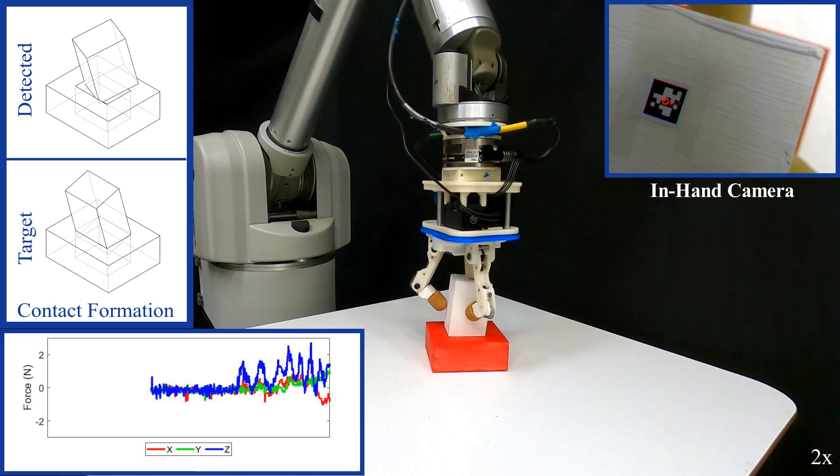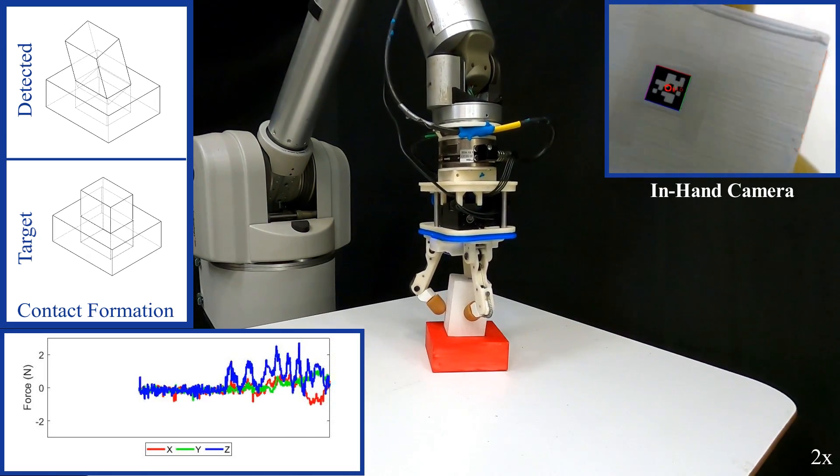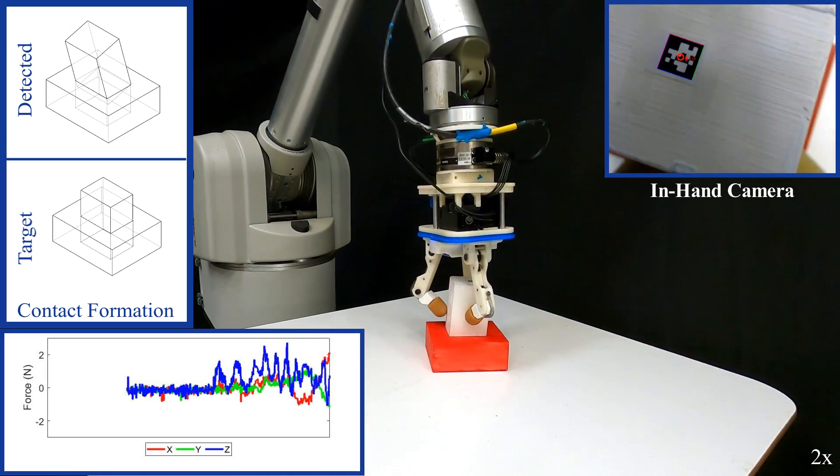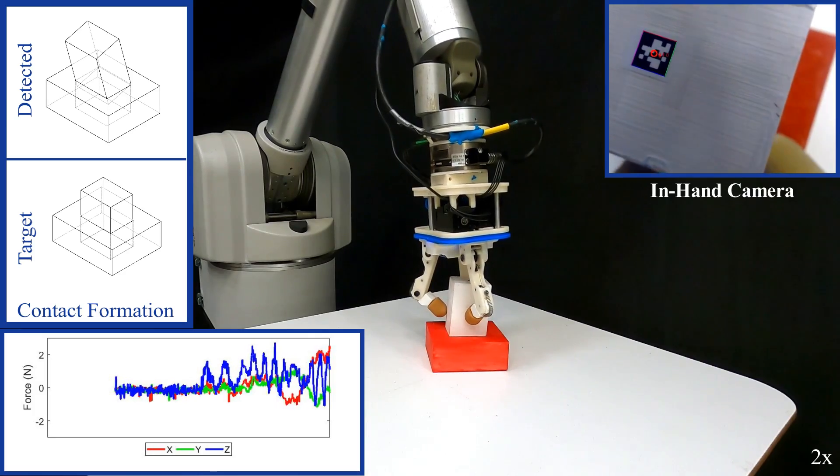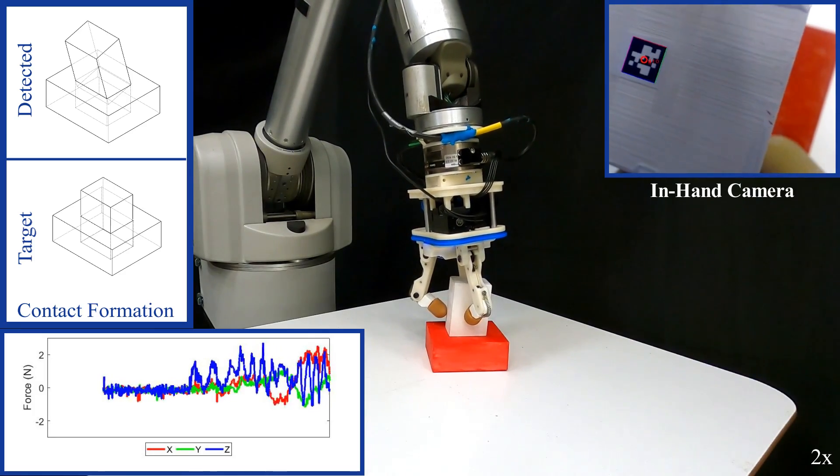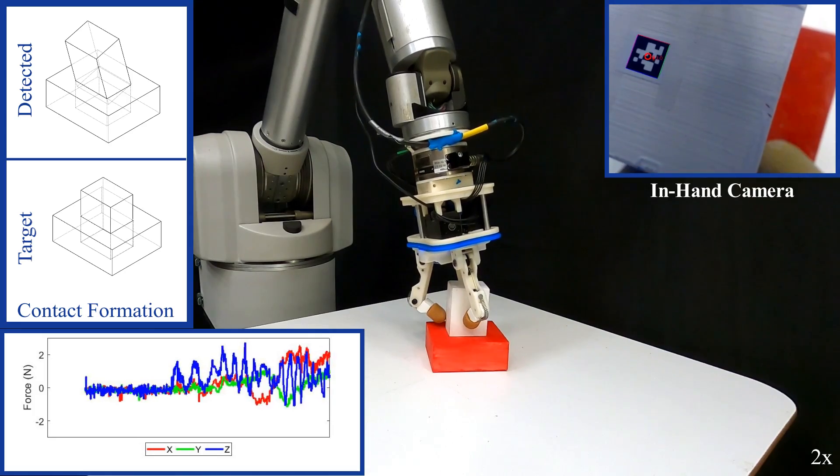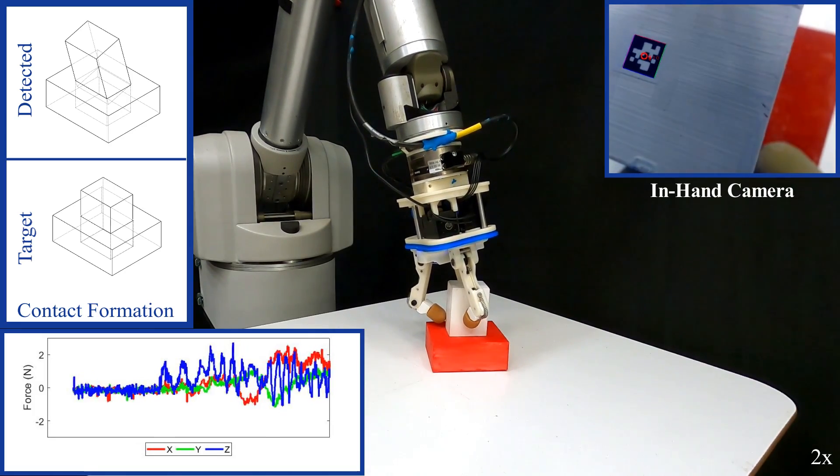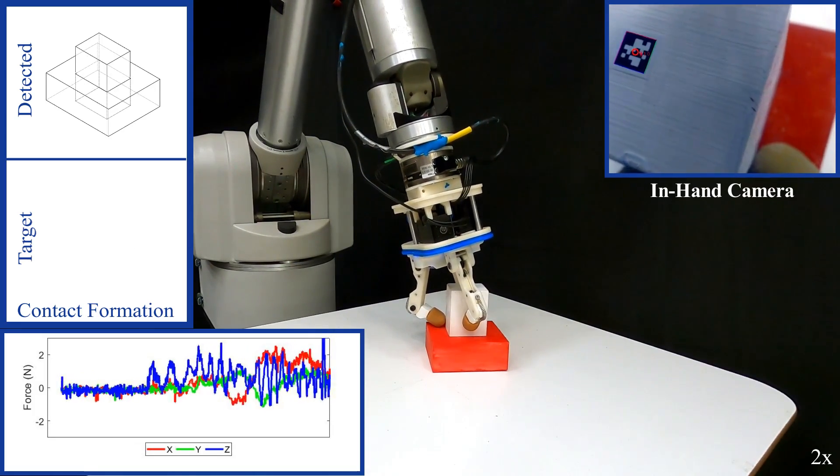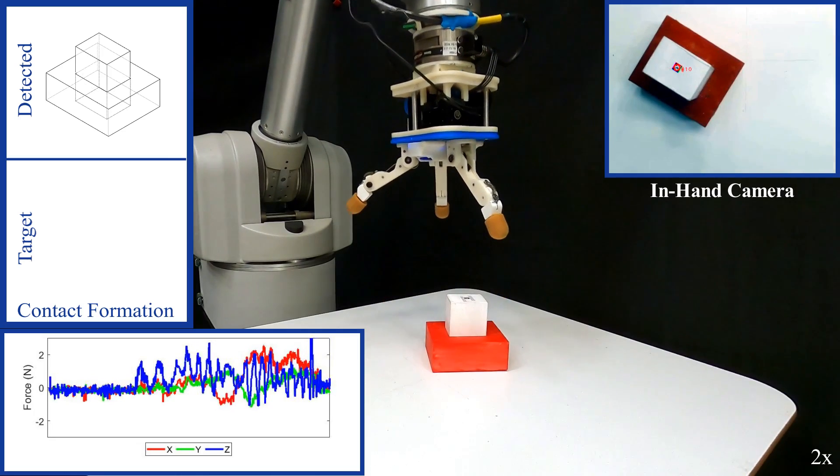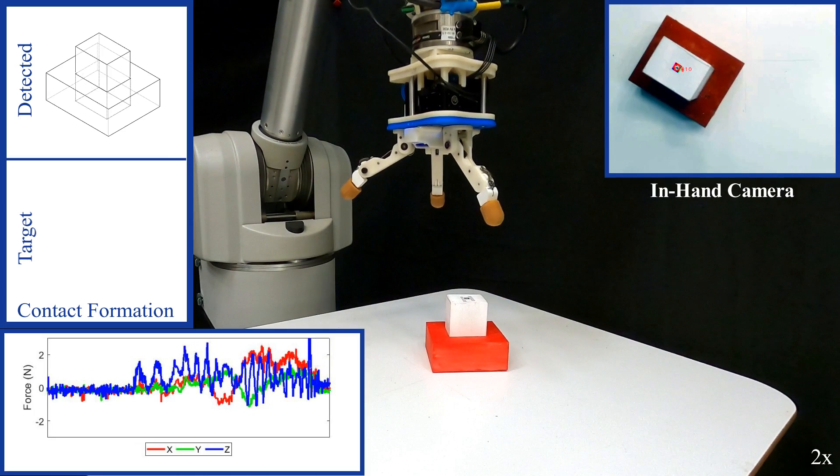Thereafter, the system continues to add constraints to the object's motion by moving in orthogonal directions. By continually adding and modulating constraints, the system maintains a certain contact configuration while searching for the appropriate orientational pose of the hole. Once found, the robot servos the object into the hole by leveling out the object marker as read by the in-hand camera.